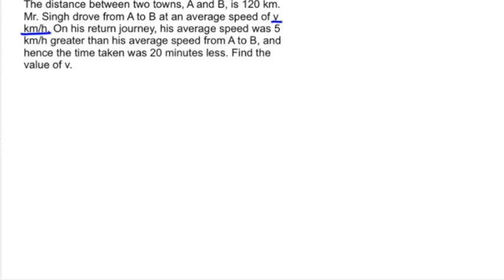So from A to B, we have V kilometers per hour. From B to A, on the way back, he drove a little faster. We know that was V + 5 kilometers per hour faster. So far so good.